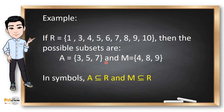For example, if R contains the elements 1, 3, 4, 5, 6, 7, 8, 9, 10, then the possible subsets are set A and set M. Set A is a subset of R because 3, 5, and 7 are inside R.